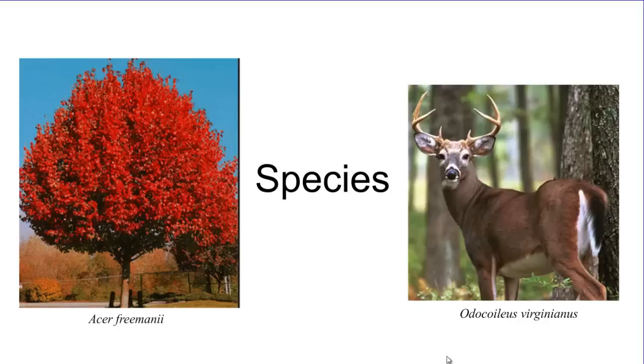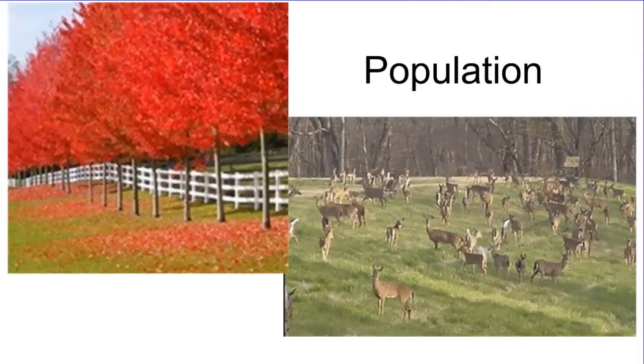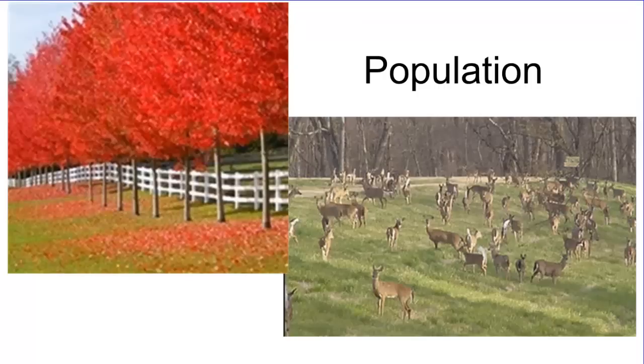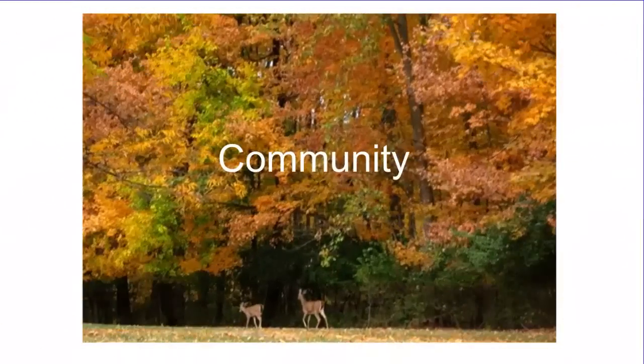You can see the name underneath it. When you have species living together with the same species in the same area, that's where we get populations. Again on the left hand side you see our maple trees from the previous level. Now we have a whole bunch living together, this would be a population of maple trees. And here is the same thing with these deer, same species living together in the same area.